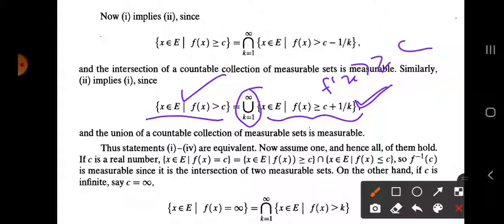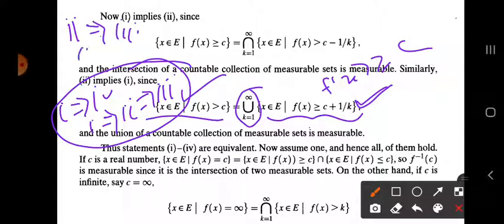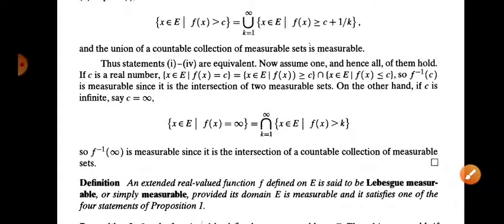So we have proved 1 implies 2 and 2 implies 1. Since 1 and 4 are complementary and 2 and 3 are complementary, automatically 4 is equivalent to 1, and 3 is equivalent to 2. Therefore all four conditions — {f > c}, {f ≥ c}, {f < c}, {f ≤ c} being measurable — are equivalent.